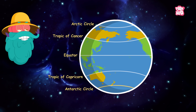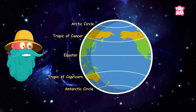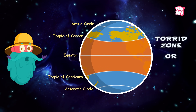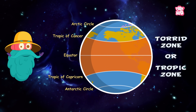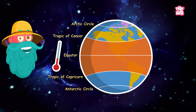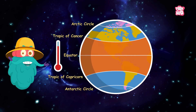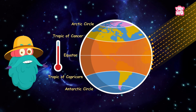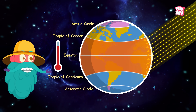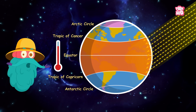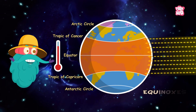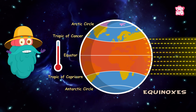The region between the two tropics is the torrid zone, or the Tropic Zone. This is the hottest part of the earth. The sun's heat falls directly on this zone during the solstice and the equinoxes.